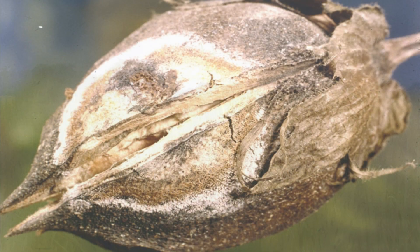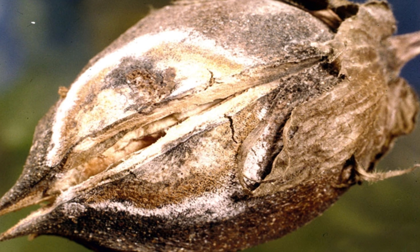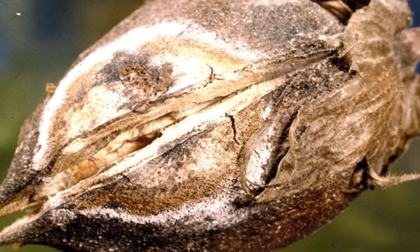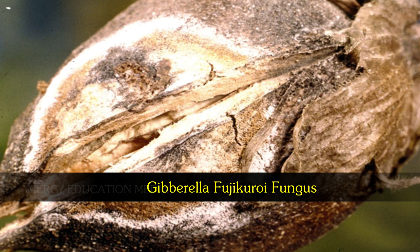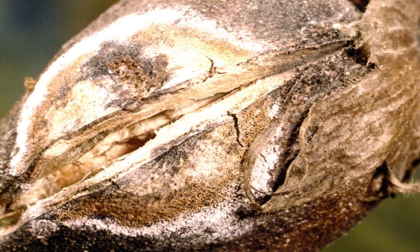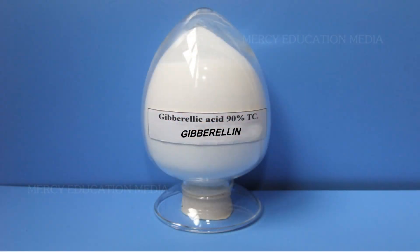Later it was discovered that the elongation was due to the action of a substance produced by a fungus, Gibberella fujicuroi. This substance was successfully isolated from the fungus and it was named as gibberellic acid.